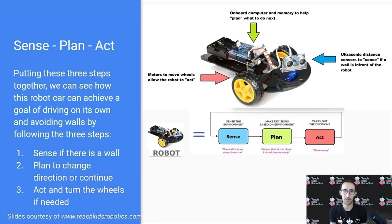Putting all these three objects together, we can identify why we consider this electronic car to be a robot. It can have a goal of not hitting a wall, driving around. It can sense if there is a wall using its ultrasonic sensor. It can plan to change direction or continue based on whether or not there's a wall in front of it. And it can act by turning its wheels if there is a wall so that it can continue driving without running into the wall.